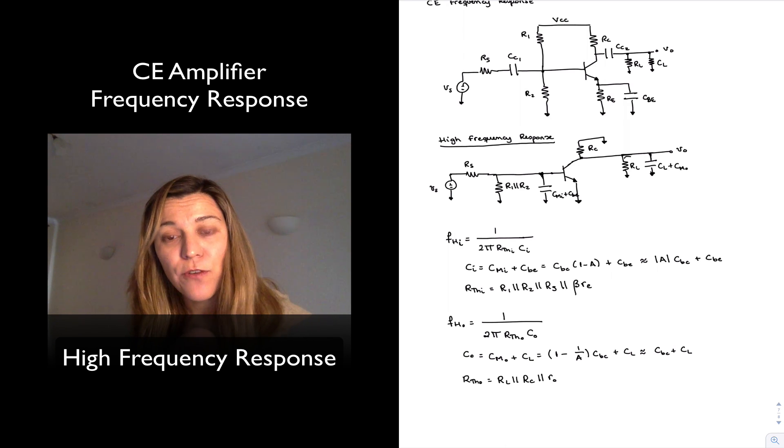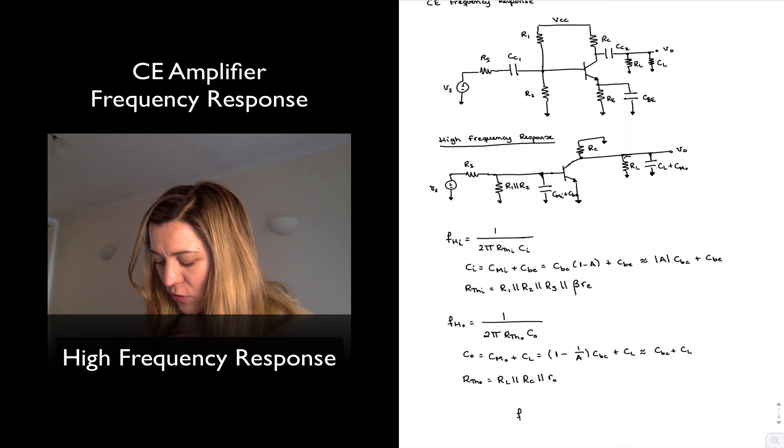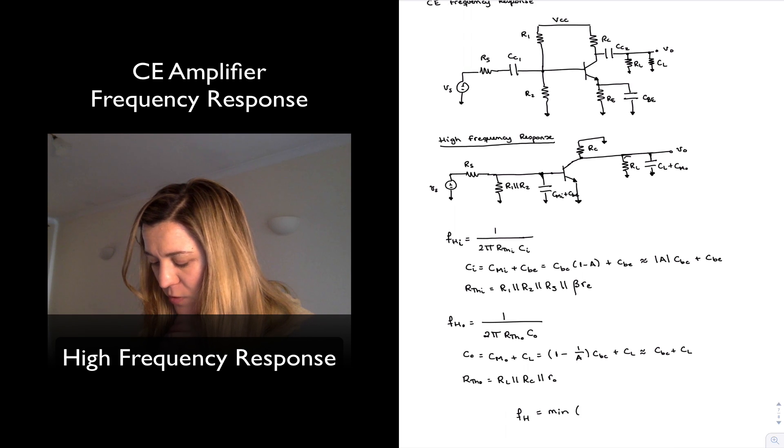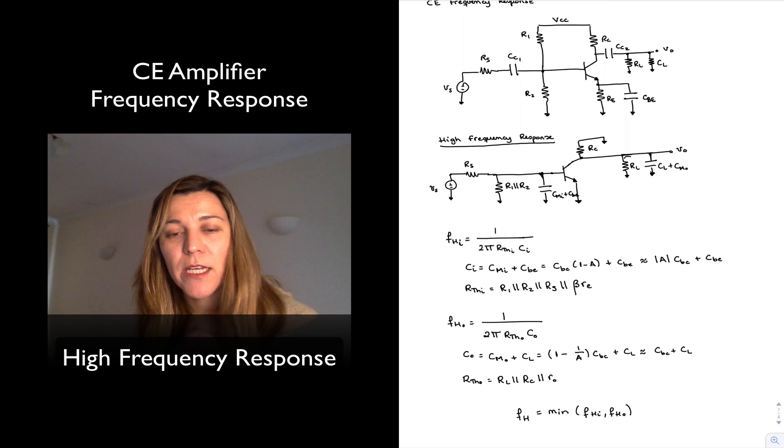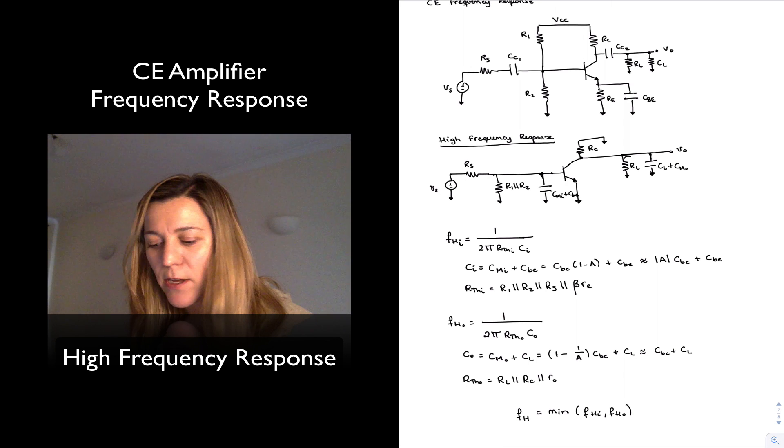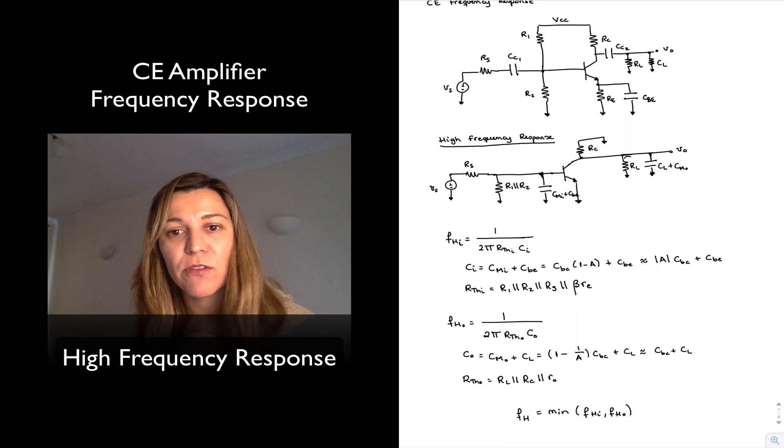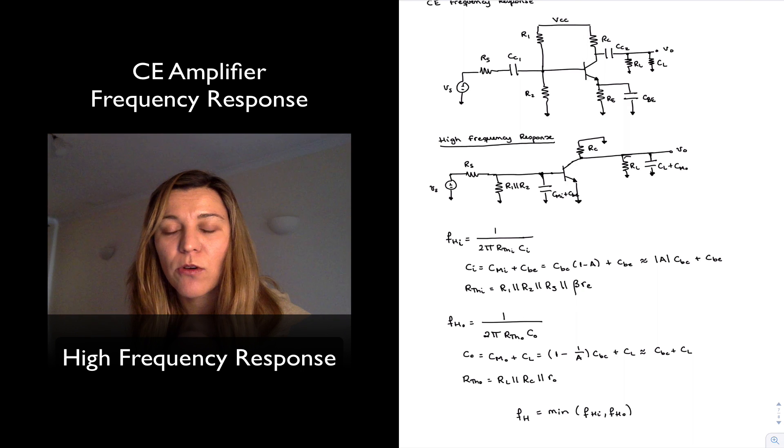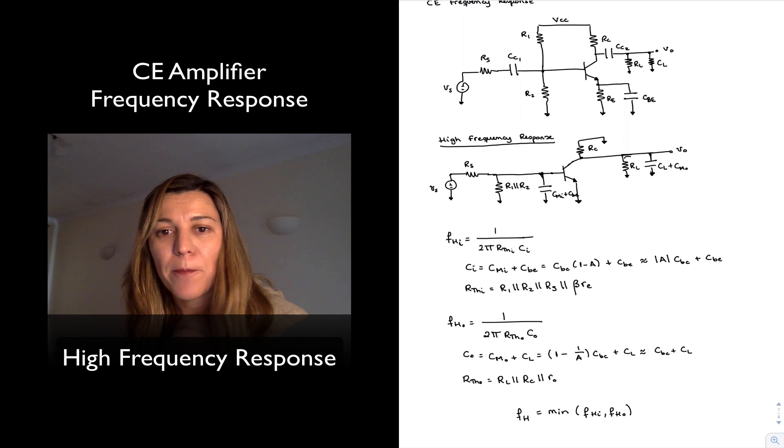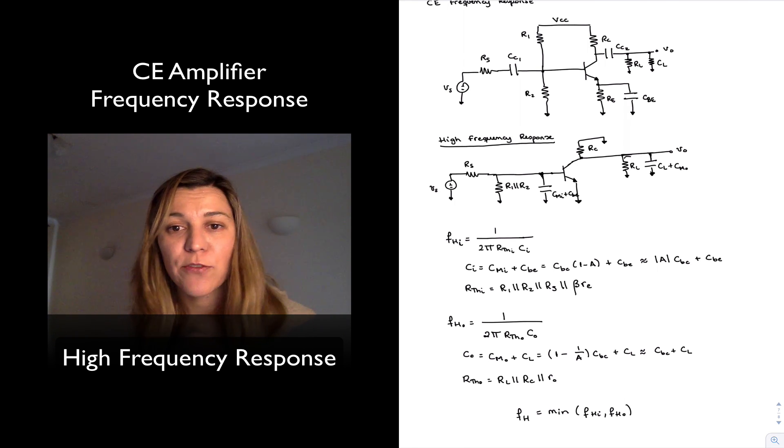And then I have two values for the two frequencies where I have my two poles, the one introduced by the input capacitance, the one introduced by the output capacitance. And I can consider my overall FH to be equal to the lowest or the minimum between the two, FHI, FHO. Now, if you're a little bit confused as to the process and how we came up with some of the resistances and so forth, don't worry, just keep going because we're going to see several examples with actual circuits, common emitter, common base, common collector. And I think that by doing a few of them in actual examples with actual values, hopefully you'll get the hang of it.